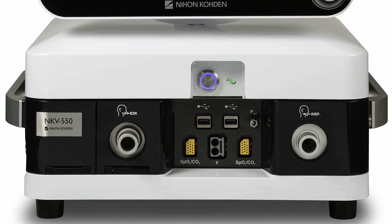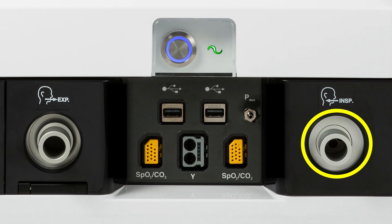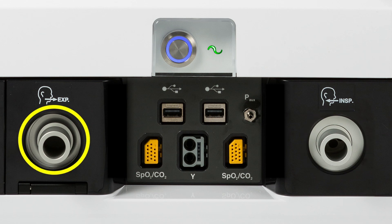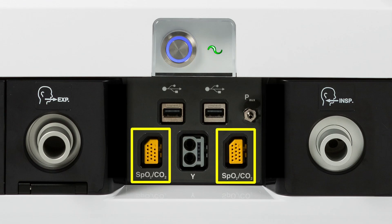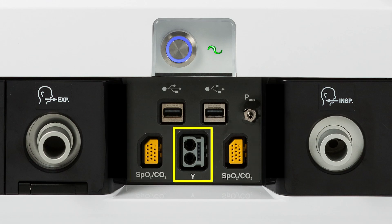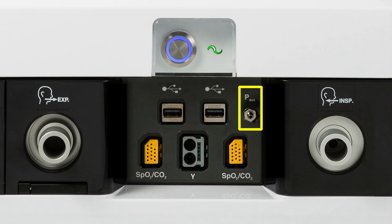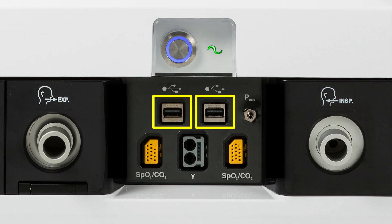On the front of the breath delivery unit is the inspiratory port, the expiratory port, the power on/off button, AC power indicator, two connectors for the Nihon Kohden CO2 and SpO2 sensors, the neonatal on-airway flow sensor, the auxiliary pressure sensor port, and two USB ports that are used for powering the Aerogen nebulizer, downloading of data such as event logs, trends, or screenshots, and also for upgrading software.